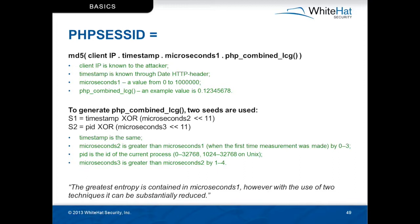The reason this is possible is through the date header of the server. The date header, when it comes back from the server, tells you the second on the server. The epoch is down to the microsecond, so you still have some entropy — it's still 500,000 tries. What these researchers did is come up with a couple of attack techniques to reduce that entropy using a little brute force on a $700 CPU, reducing the number of requests needed to crack the PHP session ID.